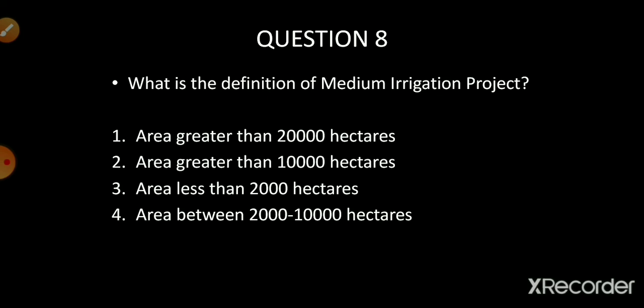What is the definition of medium irrigation projects? Options are area greater than 20,000 hectares, area greater than 10,000 hectares, area less than 2,000 hectares, and area between 2,000 to 10,000 hectares. The correct answer is option number four: area between 2,000 to 10,000 hectares.